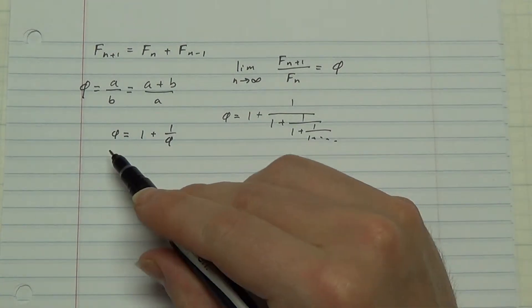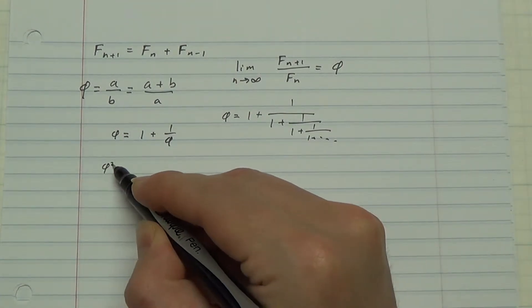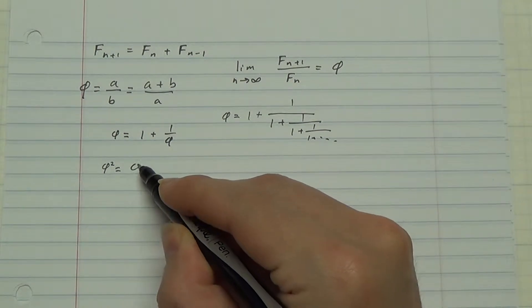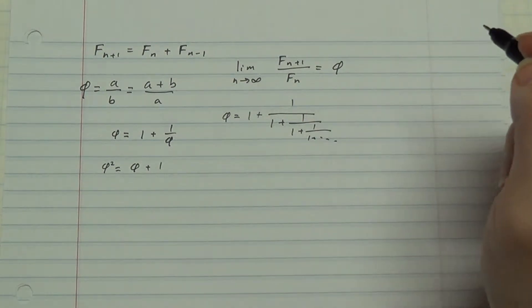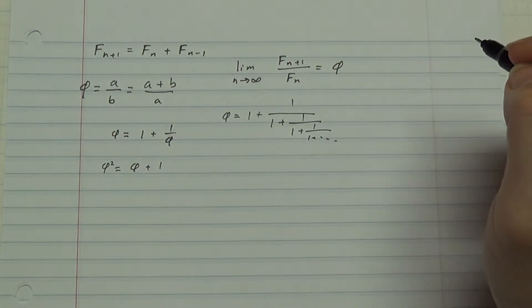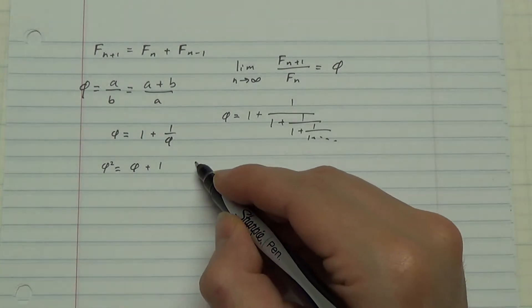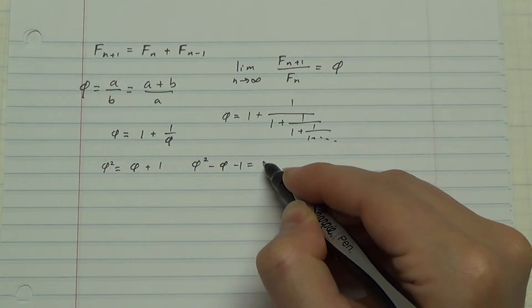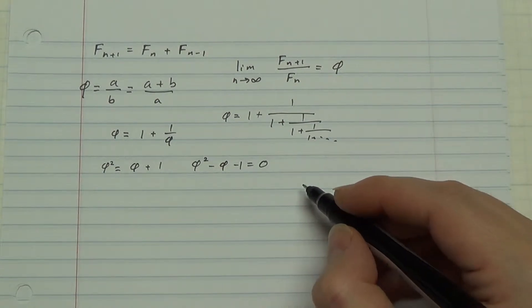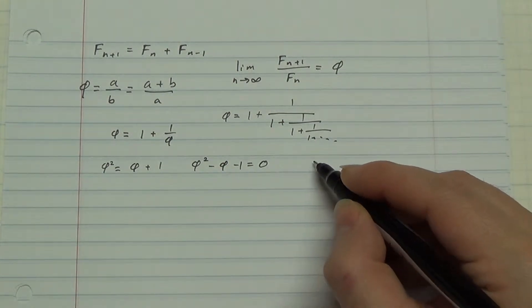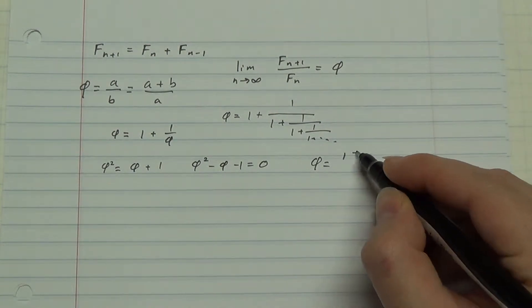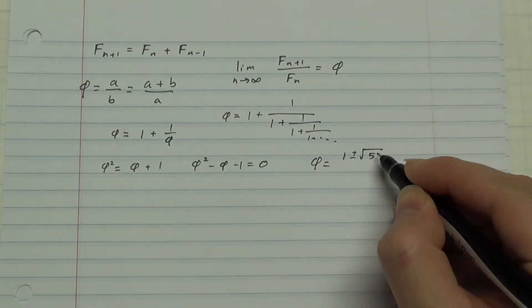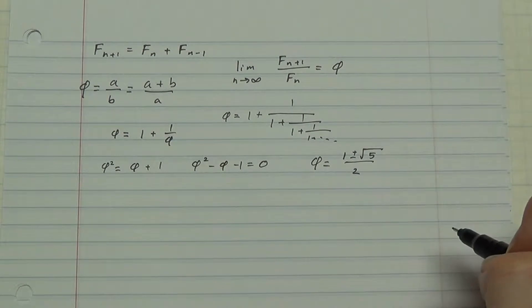Alright, but if we multiply both sides by phi, here we get phi squared is phi plus 1. That's quadratic. We can solve quadratics. Quadratic formula.